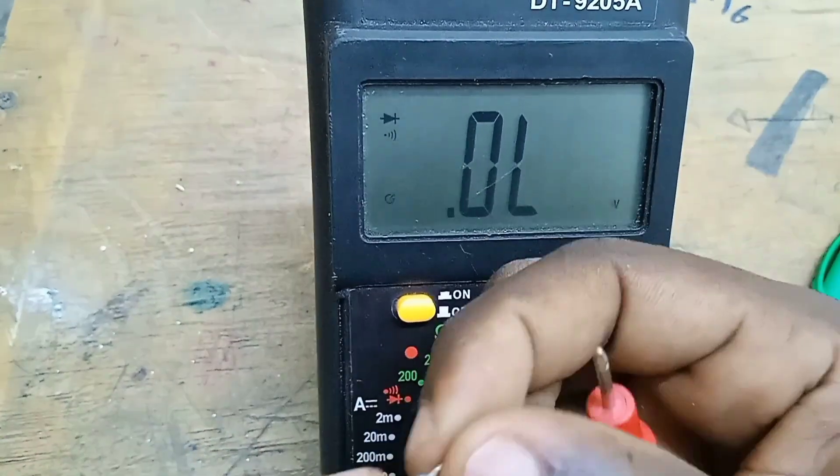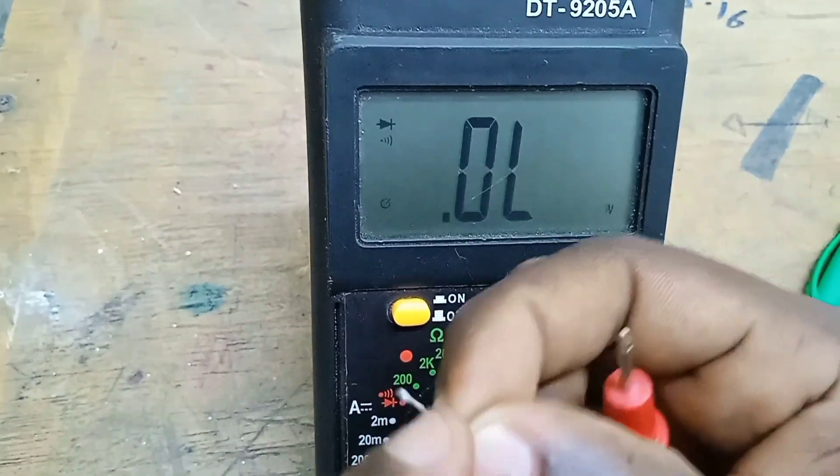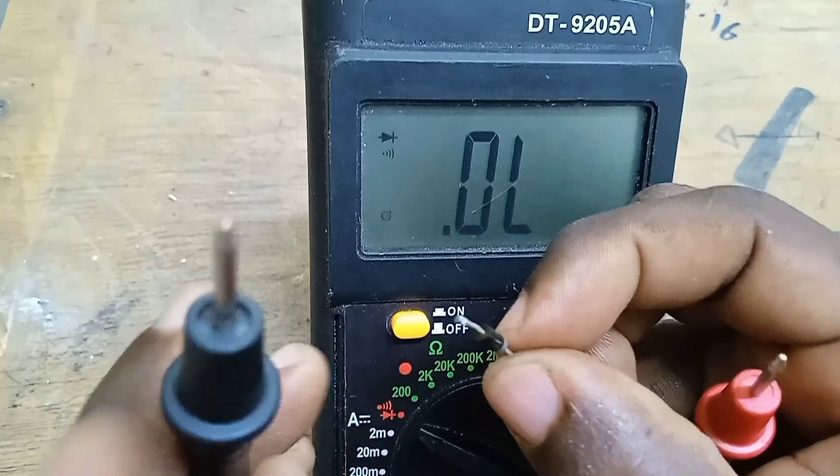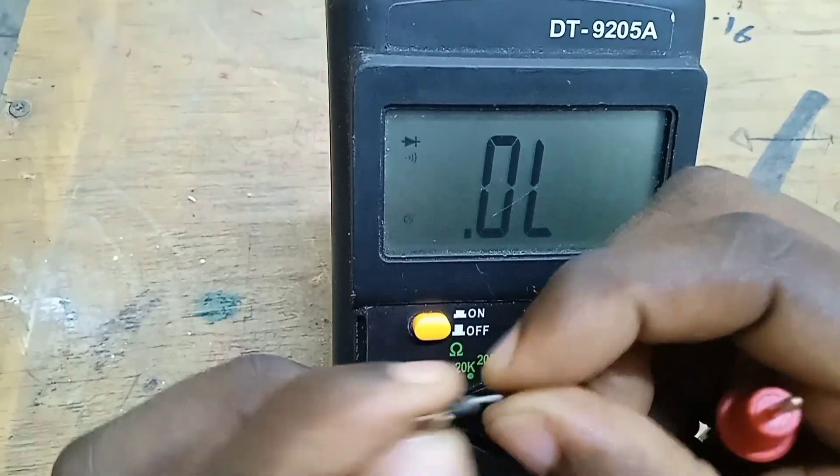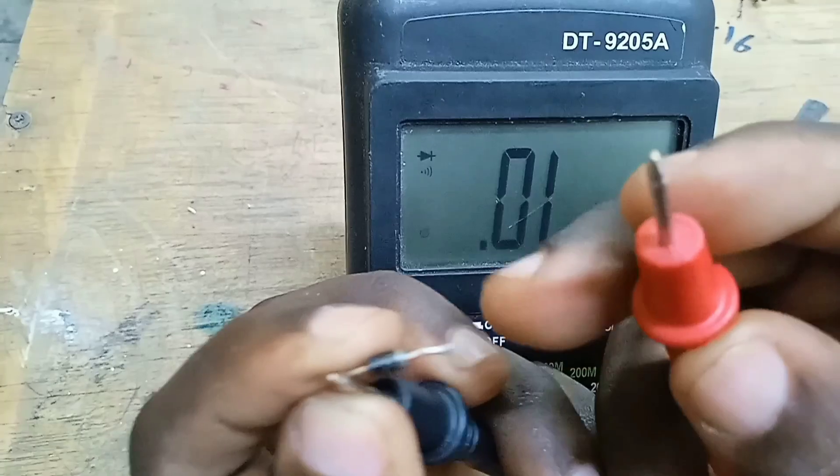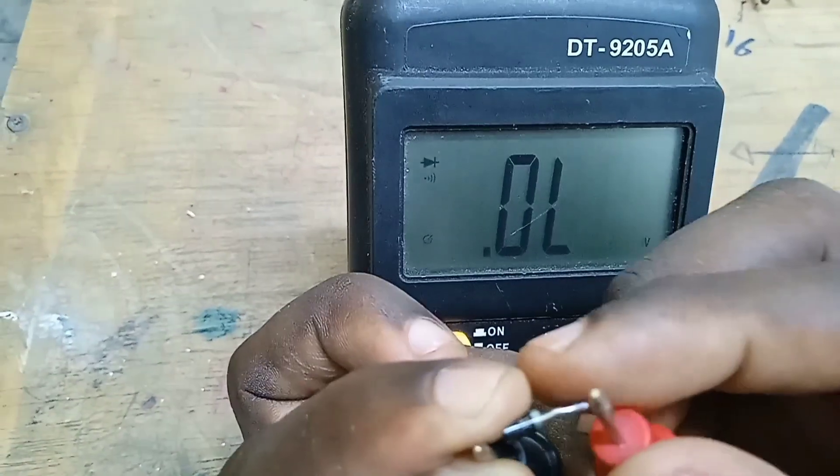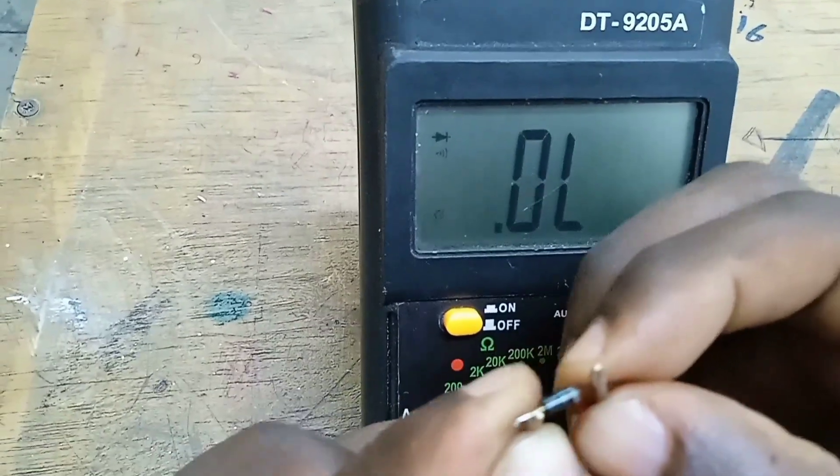Reverse bias your diode and check. Connect the negative terminal of your multimeter to the positive terminal of your diode, and the positive terminal of the multimeter to the negative terminal of the diode, and check the reading.